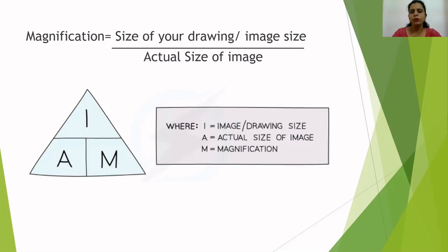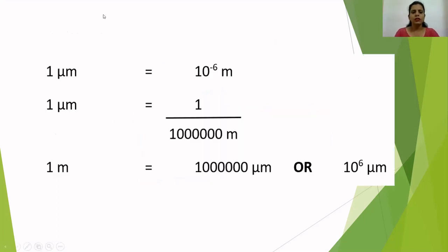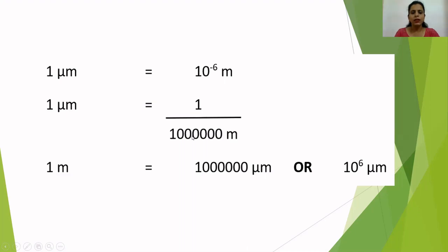In this video I'm going to teach you how to convert meters, centimeters, and millimeters into micrometers. One micrometer equals 10 to the power of minus six meters. Similarly, one nanometer equals 10 to the power of minus nine meters. The symbol for micrometer is µ (mu). So: 1 µm = 10⁻⁶ m.